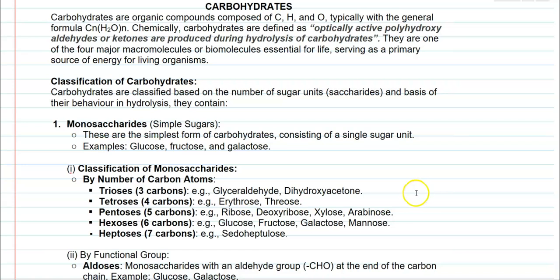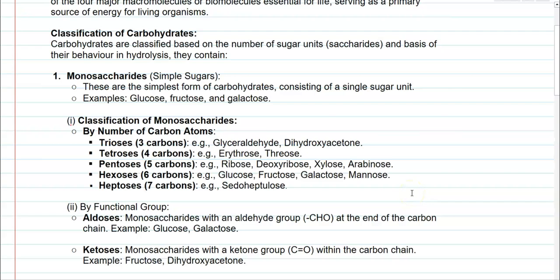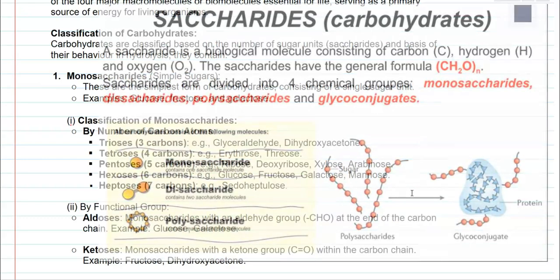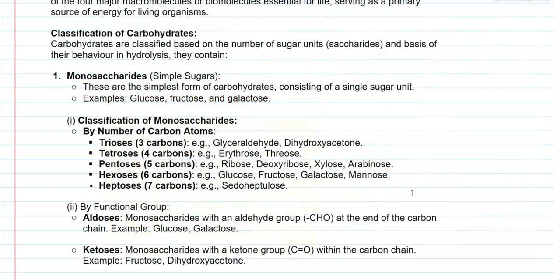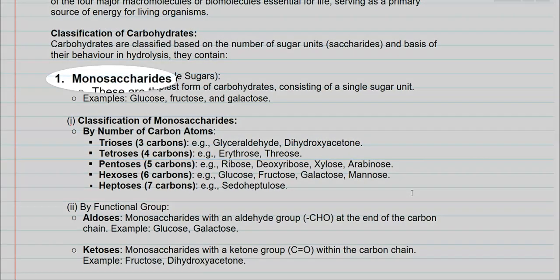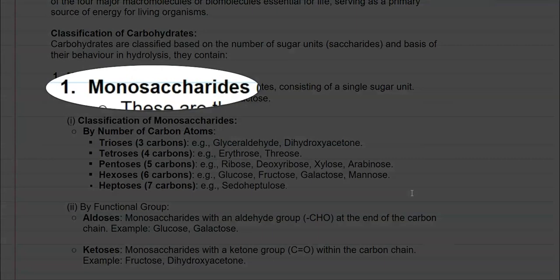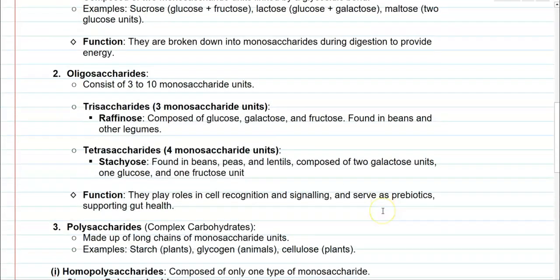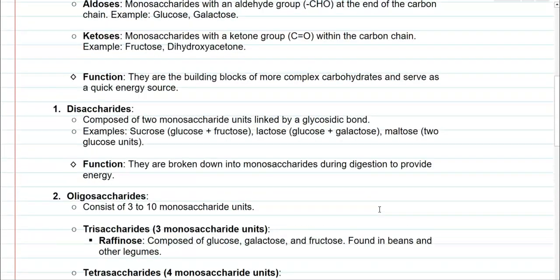Now we look at the classification of carbohydrates. Carbohydrates are classified based on the number of sugar units, technically referred to as saccharides. On the basis of their hydrolysis also, they can be classified. Using these two properties, they can be further divided into monosaccharides, disaccharides, oligosaccharides, and polysaccharides.